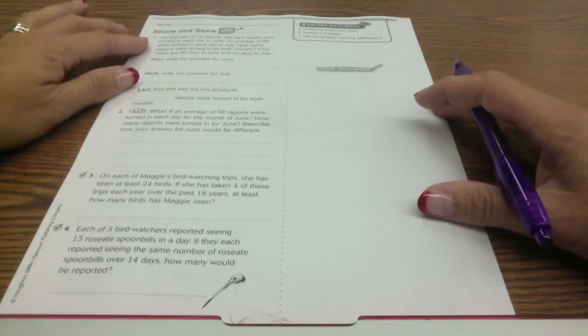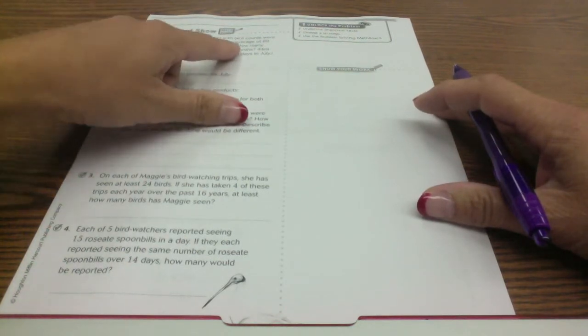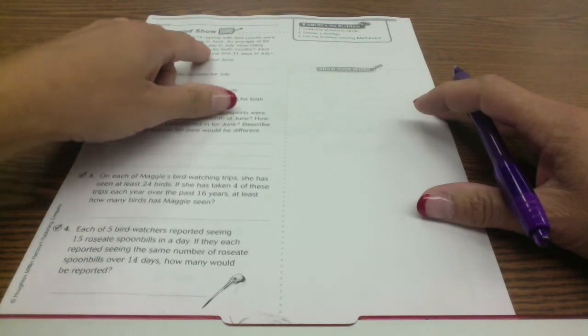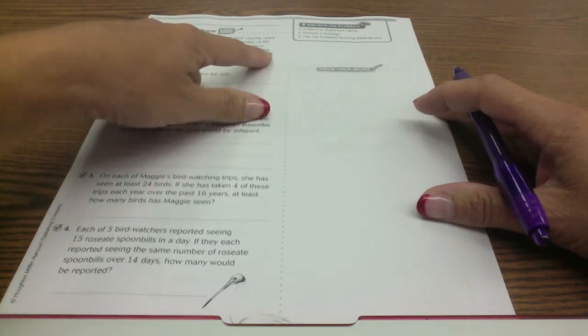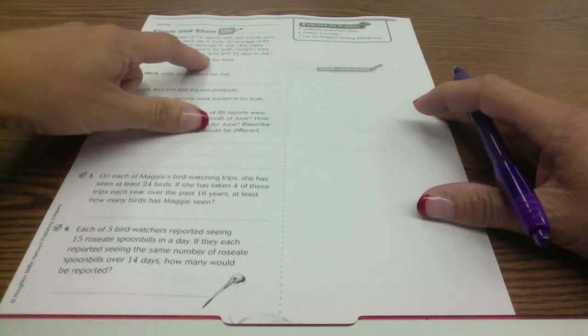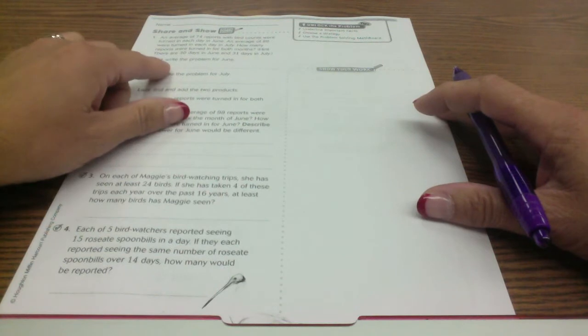Okay, an average of 74 reports with bird counts were turned in each day in June, an average of 89 were turned in each day in July. How many reports were turned in for both months? Hint: there are 30 days in June and 31 days in July. So what I need to be doing is figuring out what the problem is for June.